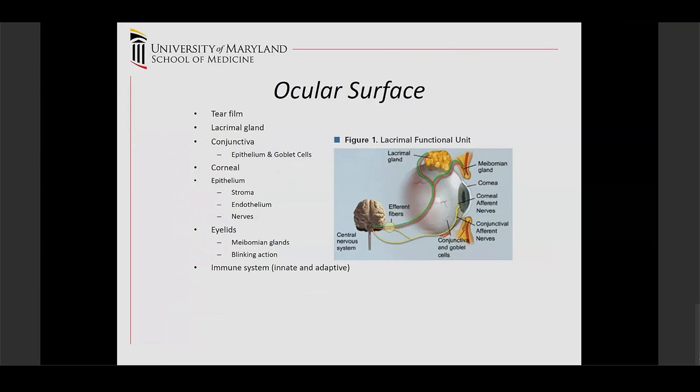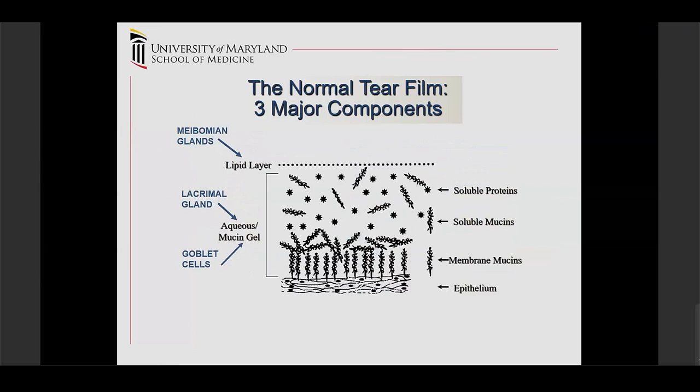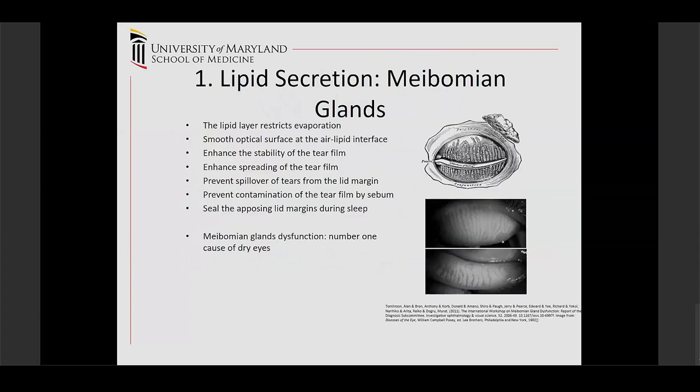Going over the normal tear film, there are three major components: the lipid layer, and the aqueous and mucin layers. The lipid layer is from the meibomian glands, and the aqueous and mucin layers are from the lacrimal gland and goblet cells, respectively. The meibomian glands are involved in lipid secretion. The lipid layer helps prevent evaporation of the tears, smooth the optical surface, and stabilize the tear film.